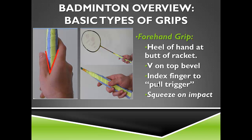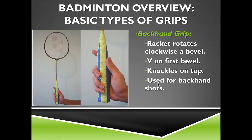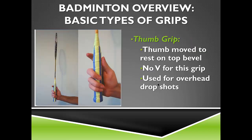For key skills, you start by teaching the forehand grip. Key cues include forming a V on the top bevel, the heel of the hand at the butt of the racket, and the index finger slightly extended as if pulling a trigger, squeezing on impact. The backhand grip involves a clockwise rotation of one bevel so the V is on the first bevel and knuckles are on top. The thumb grip is used mostly for overhead drop shots, with the thumb resting on top of the top bevel; monitor students to ensure they only use it for drop shots.